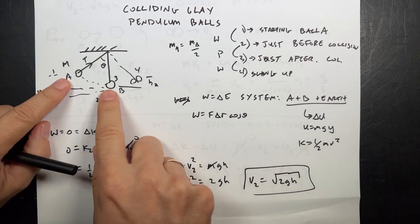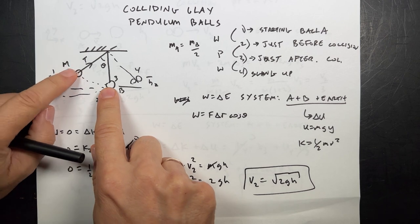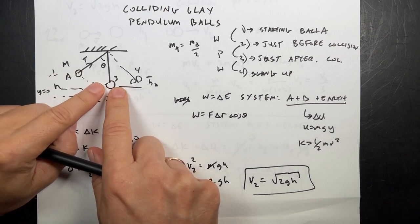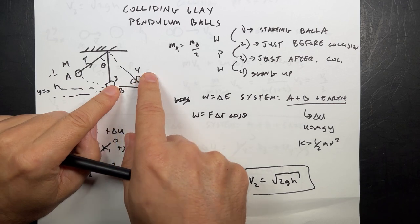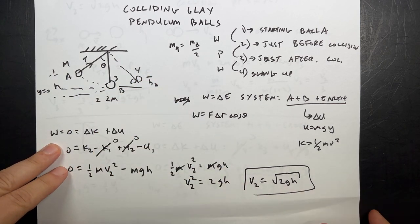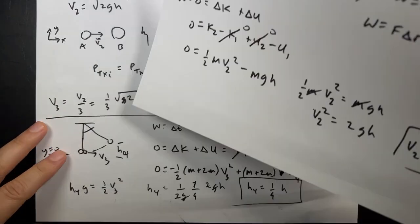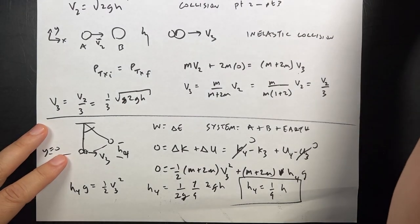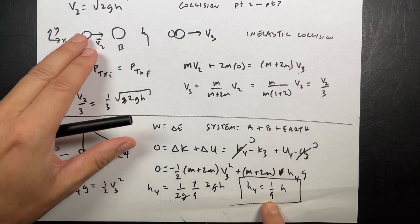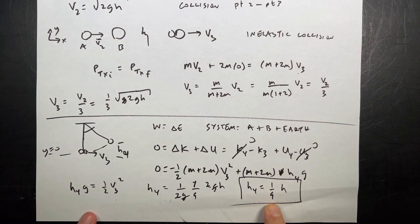I broke it into three parts: work-energy as it swings down, inelastic collision as they collide, and then it swings up. And I got that for my final answer — the height is one ninth. The mass of the balls was one to two, so this is one ninth the height. That's what I got.